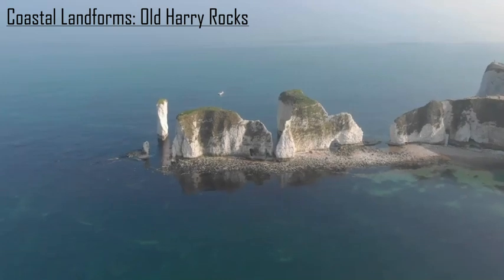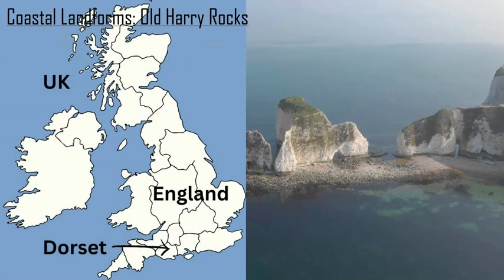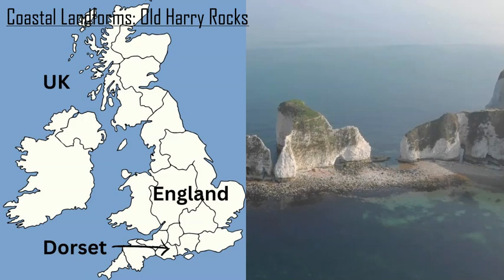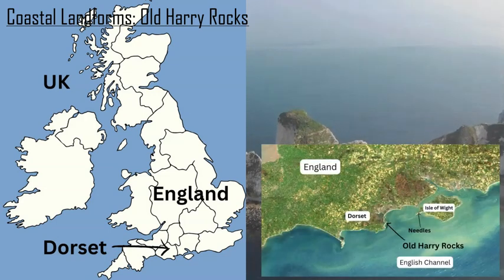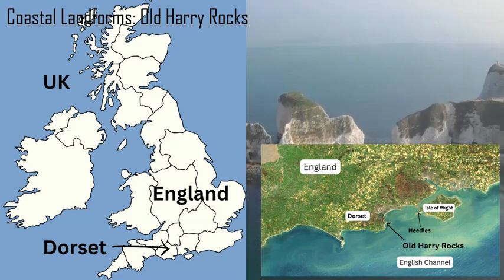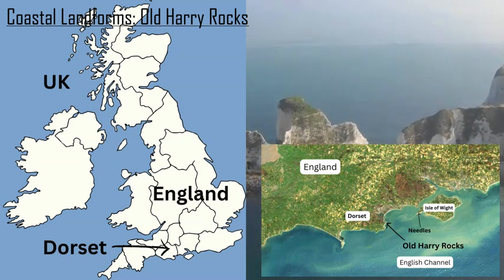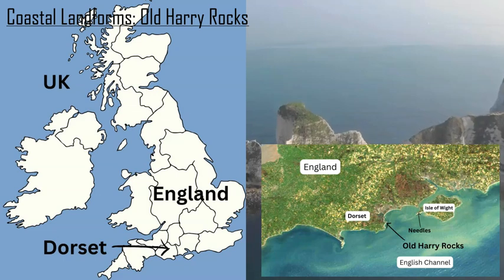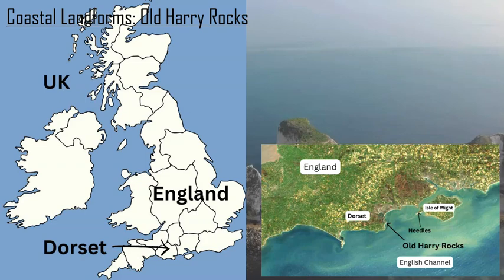These rock formations are part of the easternmost section of the Jurassic Coast in Dorset, England. They're called Old Harry's Rocks — an amazing set of rock formations jutting out into the English Channel, and the geology is quite fascinating.